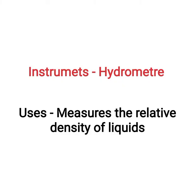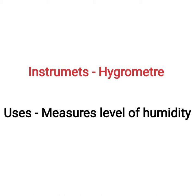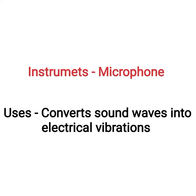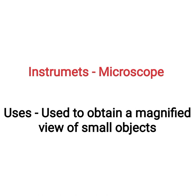Instrument hydrometer: measures the relative density of liquids. Instrument hygrometer: measures the level of humidity. Instrument lactometer: measures the relative density of milk to determine purity. Instrument microphone: converts sound waves into electrical vibrations. Instrument microscope: used to obtain a magnified view of small objects.